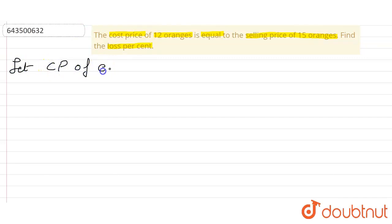...of each orange is equal to rupees 1. So according to the question, the CP of 15 oranges...